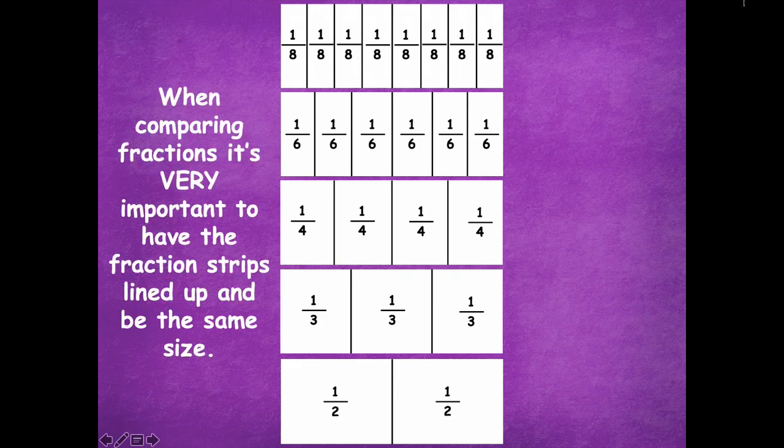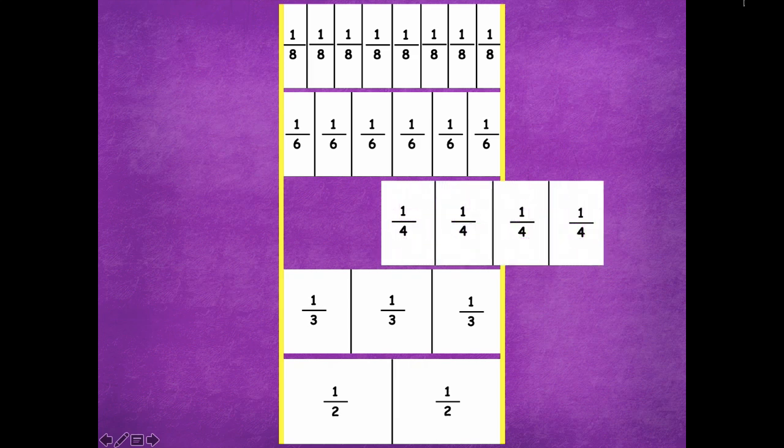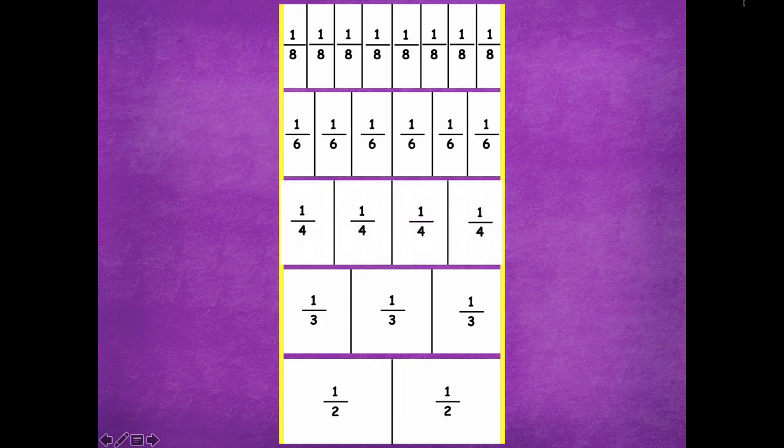When comparing fractions it's very important to have the fraction strips lined up and be the same size. So notice how if I have my lines they're drawn or they're lined up nice and neat. Both of the ends on each side meet at the same point. I don't have one that's sticking out to the side as I'm trying to compare one third and one fourth. They need to be lined up nice and neat just like this.